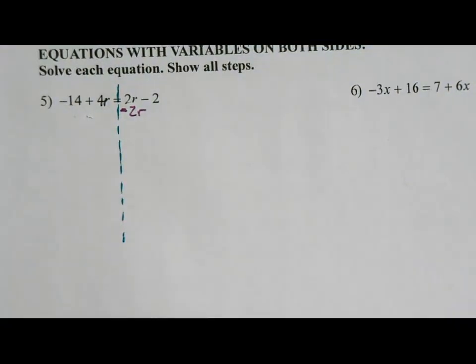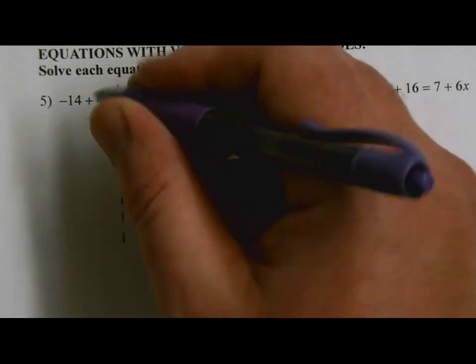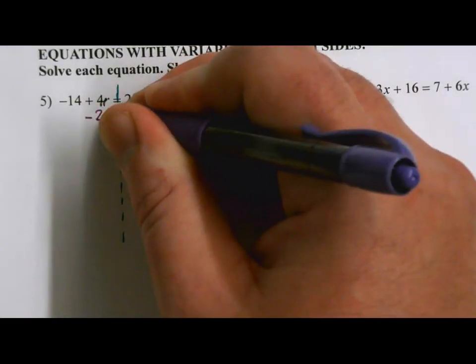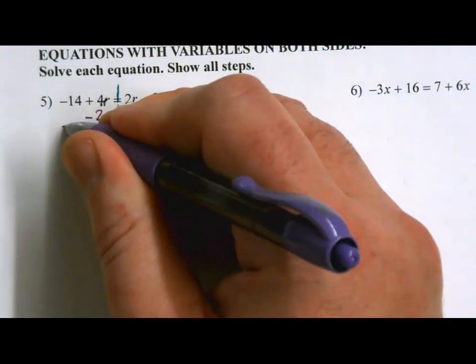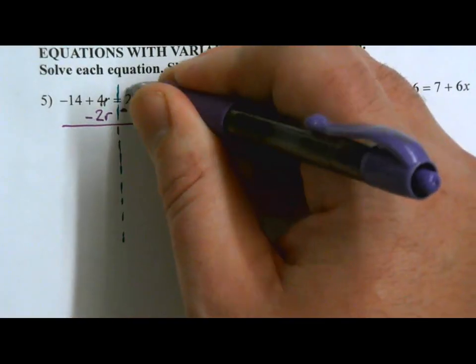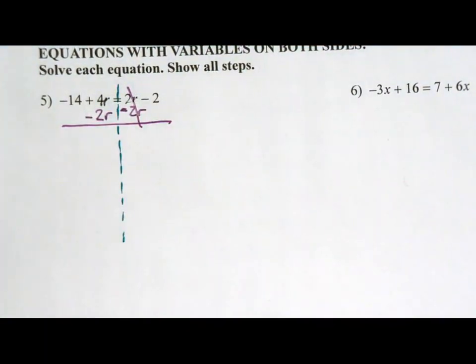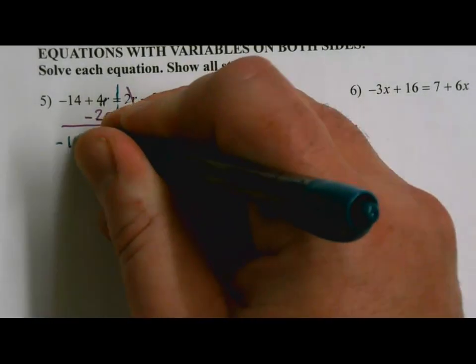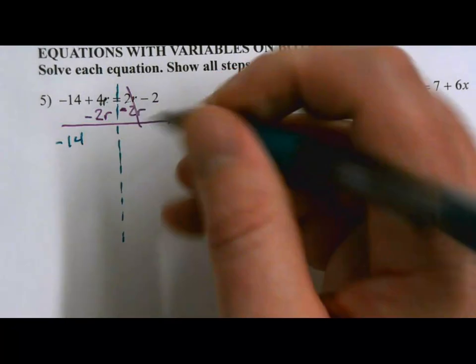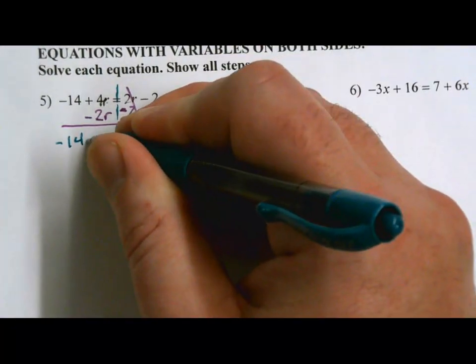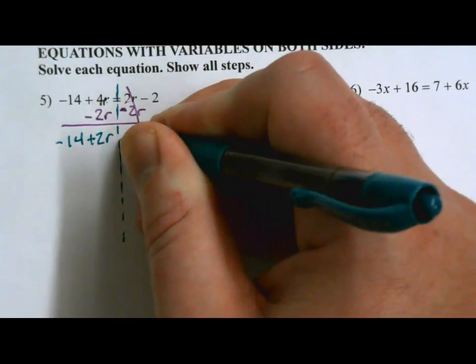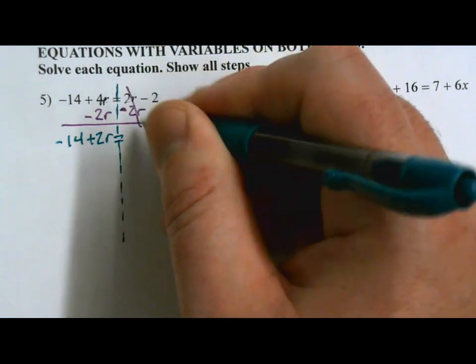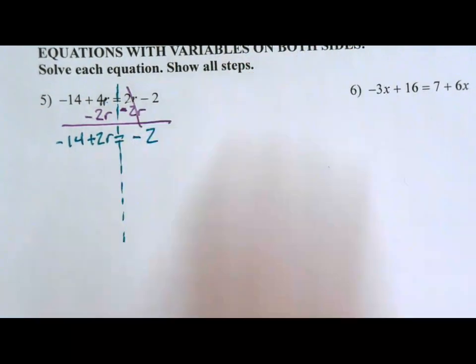2r minus 2r should cancel. But you know the rule of algebra. Anything I do on this side, I've got to do the same thing over here. So I'm going to go minus 2r here as well. 2r minus 2r, those are going to cancel. Alright, let's see what we have left in our equation here. Negative 14, nothing happened there. We had a 4r minus 2r. 4 minus 2 would be positive 2r. Bringing down the equals, those were gone, we still have a minus 2 left over here.